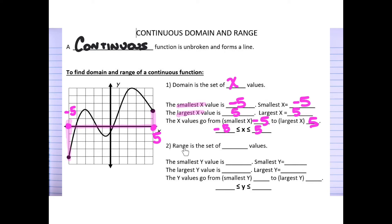Now we do exactly the same for the range. Range is the set of all y values. I focus on the y-axis and find the smallest y value — the lowest the line gets. In this case the lowest point is negative 4, so my smallest y value is negative 4.